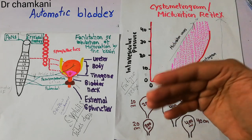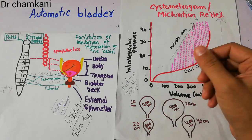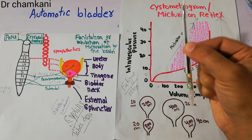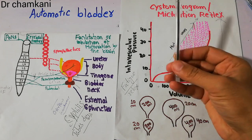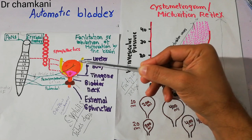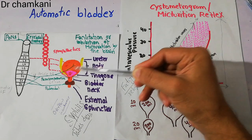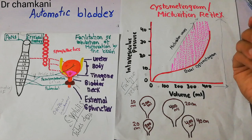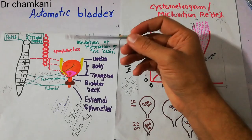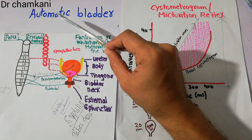Periodic contraction of the urinary bladder is important for emptying of the urinary bladder, or the urination process. The micturition reflex starts when urine accumulates in the bladder. Urine comes into the urinary bladder, and without understanding this process you won't be able to understand automatic bladder.